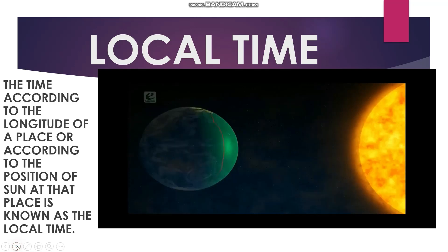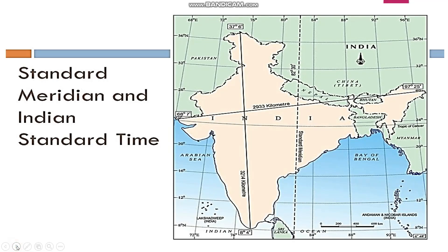Now let's move on to standard time. In India, 82.5 degrees east longitude is considered as the standard meridian of the country. It passes through Allahabad in Uttar Pradesh. The time based on this meridian is called Indian Standard Time or IST. It is 5 hours 30 minutes ahead of GMT, that is Greenwich Meridian Time.